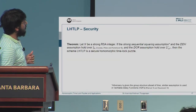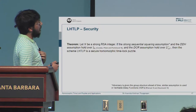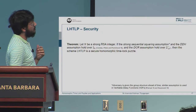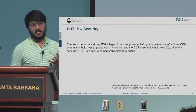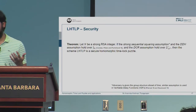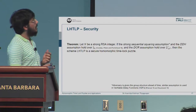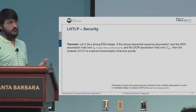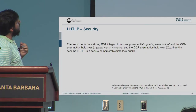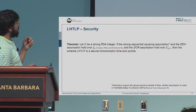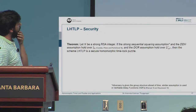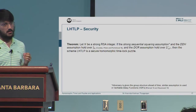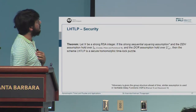The security argument relies on the strong sequential squaring assumption, which says the adversary has knowledge of the group structure ahead of time — an assumption made in recent works. We also rely on the DDH assumption over J_N, which is the Jacobi-symbol-plus-one subgroup of Z_N*, and the DCR assumption, that is the decisional composite residuosity assumption.